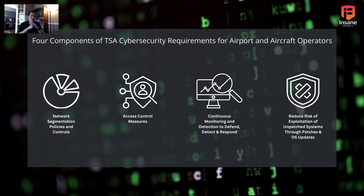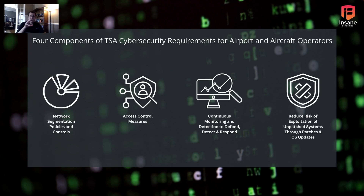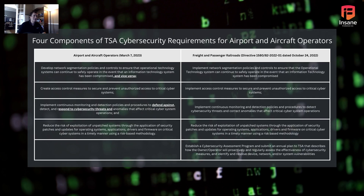The fourth area from the press release — we weren't able to find the full document — is reducing risk of exploitation through patching, OS updates, and other areas. TSA mandated that airports need to patch both software and their operating systems. These four components from March were very similar to what was passed out in the freight and passenger railroad operators requirements.